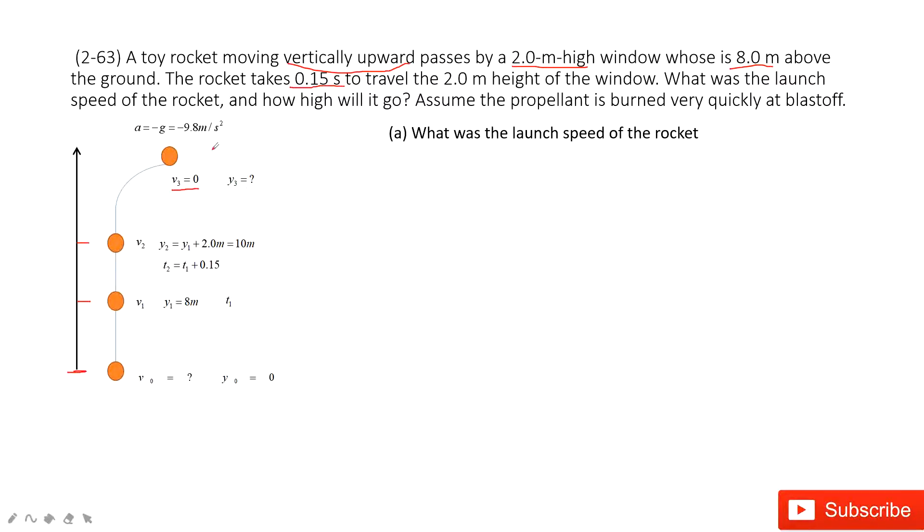In this whole process, this is an upward throw problem. The acceleration is due to gravity, always pointing down, so we keep the negative sign there. The magnitude for acceleration is 9.8 meters per second squared.